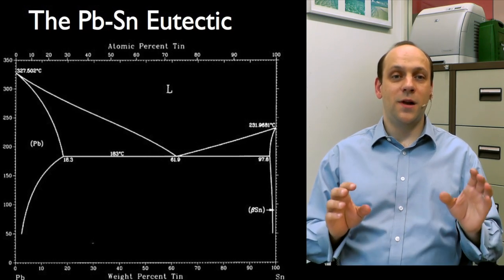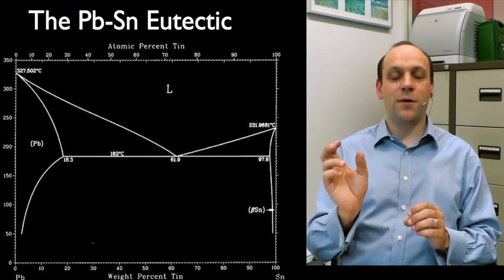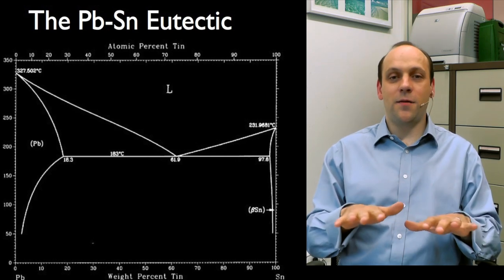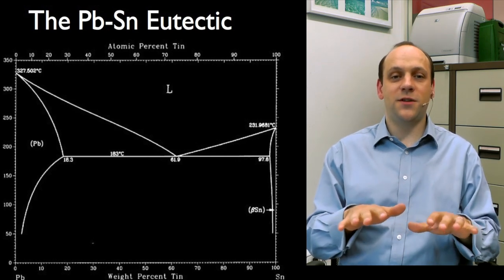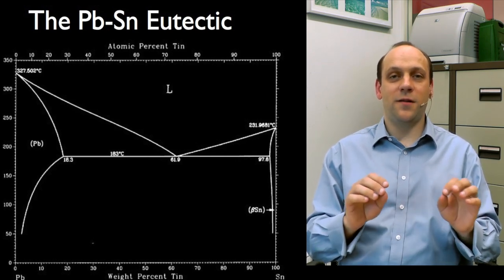And then there's the big liquid plus lead region in between, a big liquid plus tin region. And then below that, once you've gone through the eutectic temperature, there's now beta and tin region.